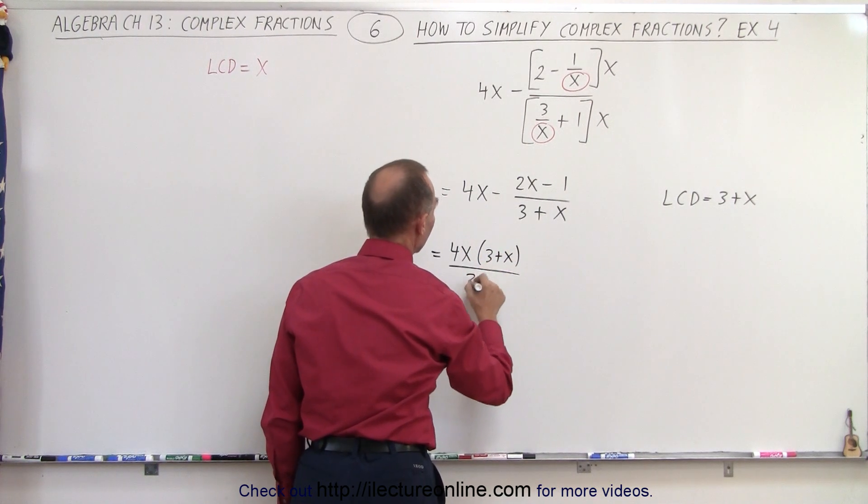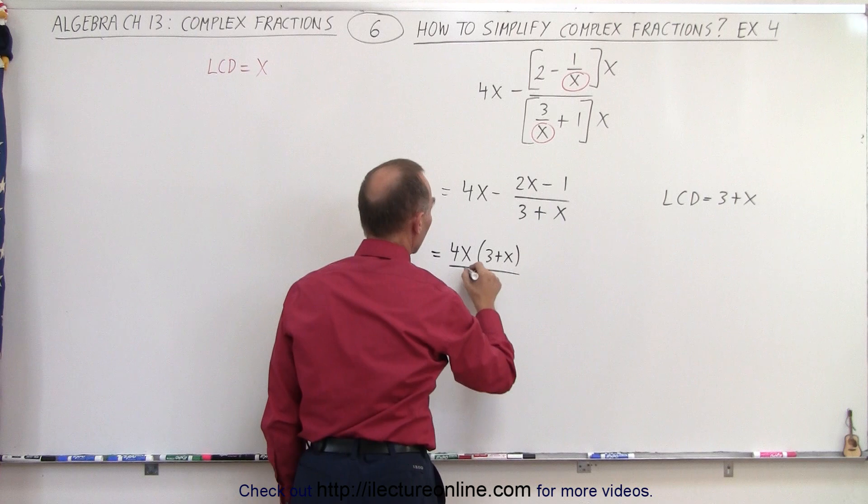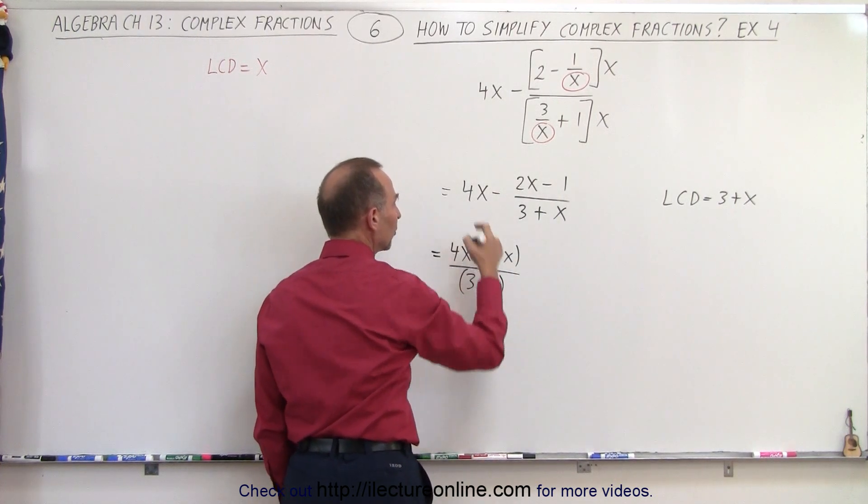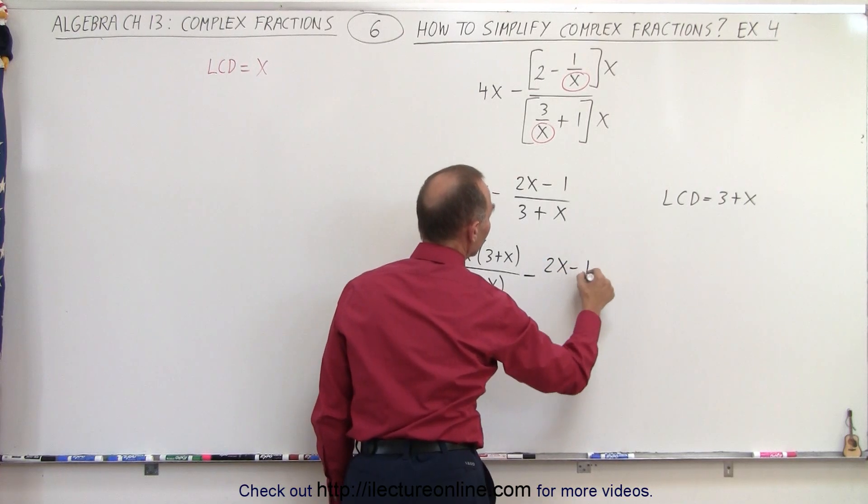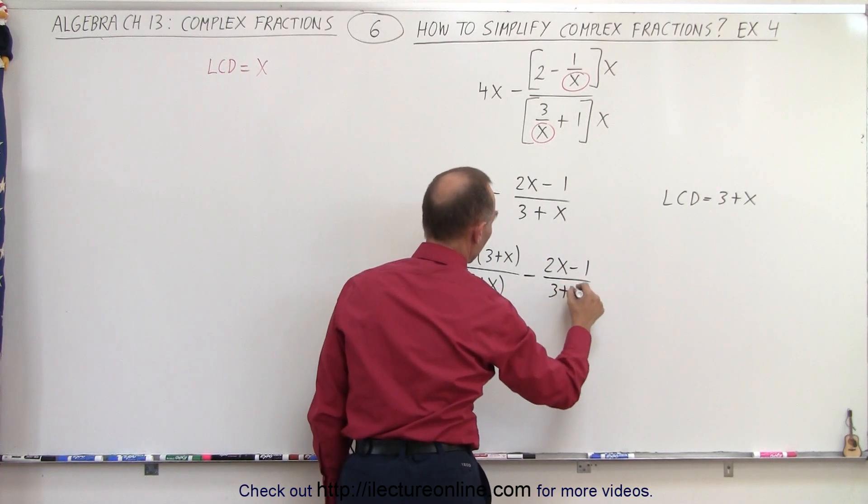Which means we're going to take the 4x and multiply it times 3 plus x, but also divide it by 3 plus x. So now notice, we can cancel this and get the original back.